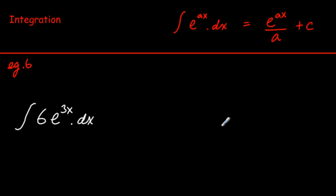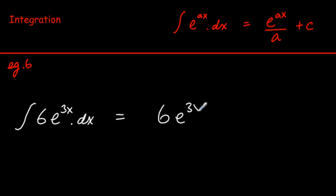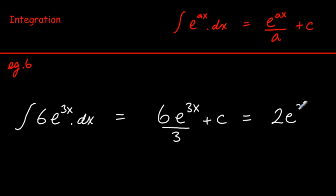Example 6: we learn from the log tables that the integral of e^(ax) dx is e^(ax) divided by a, plus C. So the integral of 6e^(3x) becomes 6e^(3x) divided by 3, which neatens up, and we always add on the constant of integration.